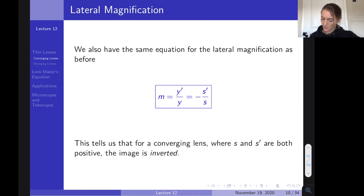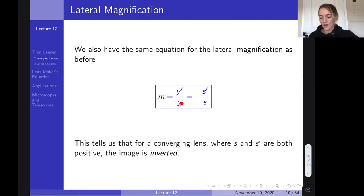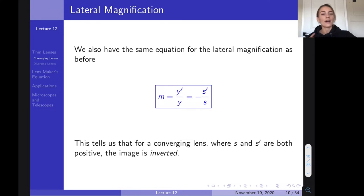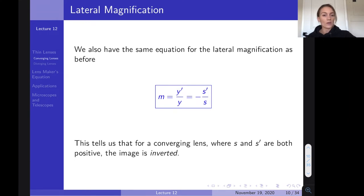We also have the same magnification equation: the lateral magnification M equals the image height Y' over the object height Y, which equals -S'/S. For a converging lens, S' and S are both positive, so the magnification is always negative — meaning the image is always inverted.